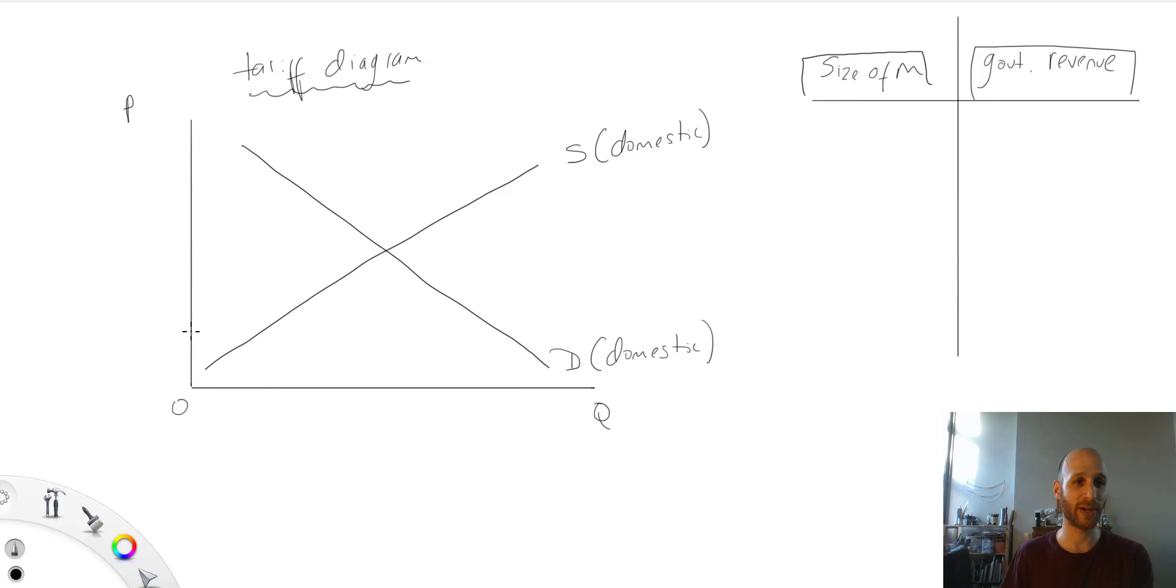Let's start with the free trade price. So remember, here, price world, the free trade price. So then I've got here, which we'll call quantity Q, here, which we'll call quantity Q1.